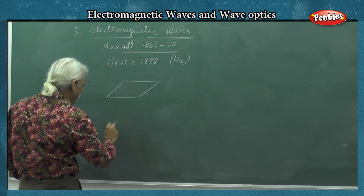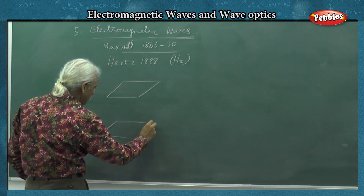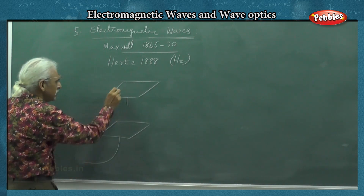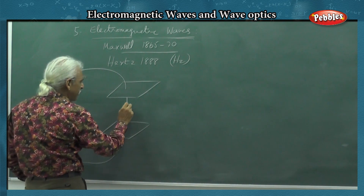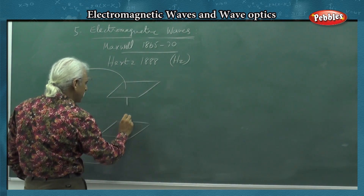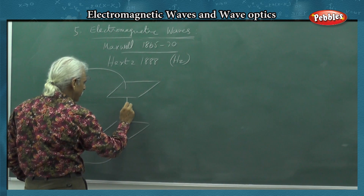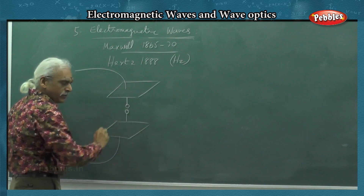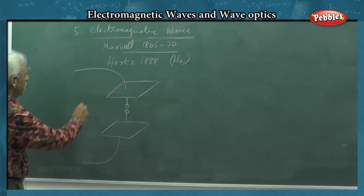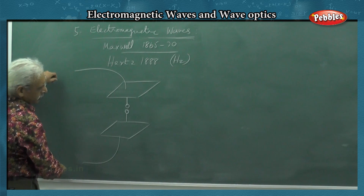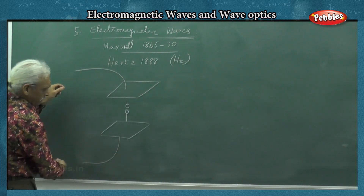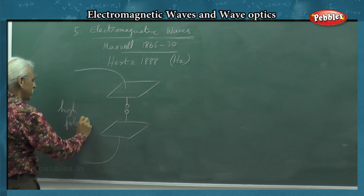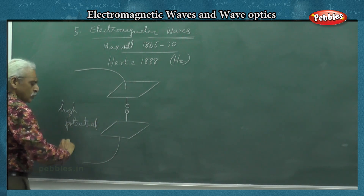He took one metal plate and another metal plate. In each metal plate there are terminals, and at each end there are metal spheres - one on top and one on the bottom. A high potential difference is applied across these two metal spheres.